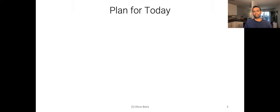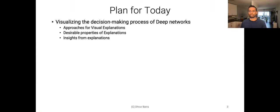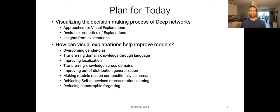Today we will first look at explaining the decision making process of deep networks through visual explanations. We look at certain approaches and properties of explanations, look into some insights that we can gain from that, and then we will see how these visual explanations can improve models in several ways.